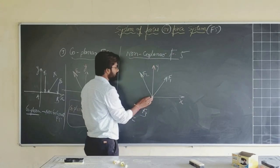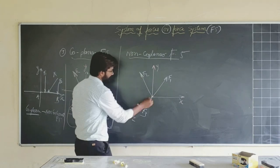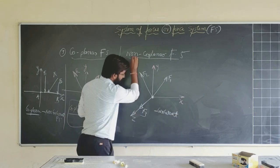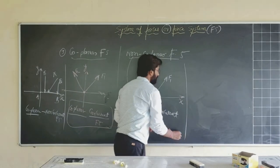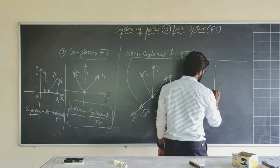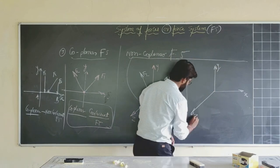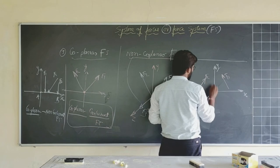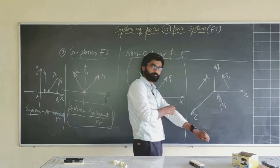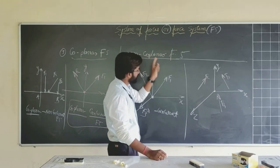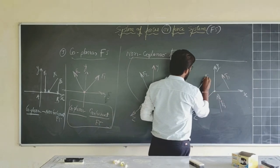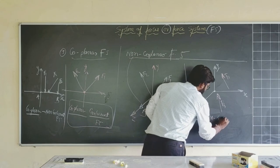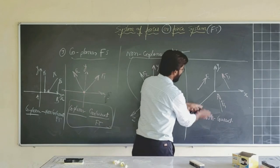For non-coplanar force systems, if all forces still act at a single point, it is a non-coplanar concurrent force system. If we have three axes x, y, z with forces F1, F2, F3 acting at different points of application, it is non-concurrent — giving us a non-coplanar non-concurrent force system.